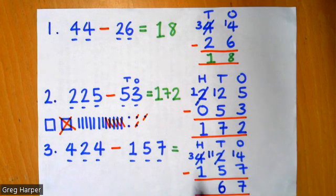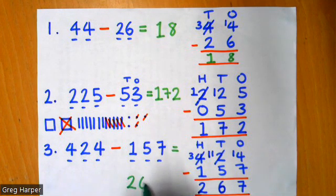And our final step then is our three hundreds, take away 100. I know three hundreds, take away one is two. And that gives me the answer 267.